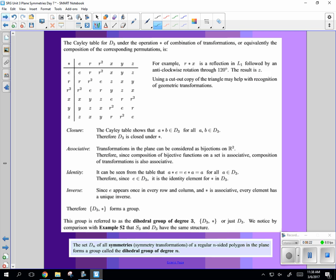Well, got the Cayley table here for D3. So you have E, R, R squared, X, Y, Z. E, R, R squared, X, Y, Z. And then you can see that it's closed. It's associative. If you look at it as a bijection, or a bijection, it's going to be associative.